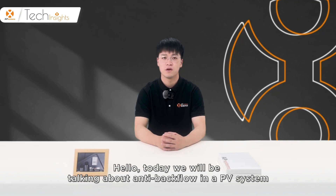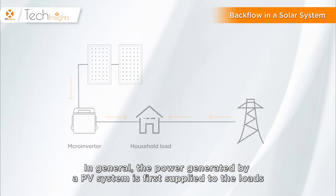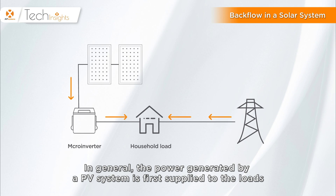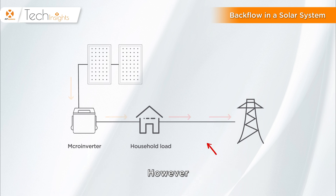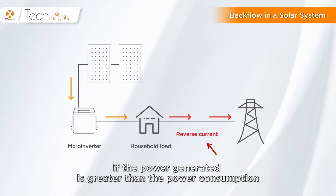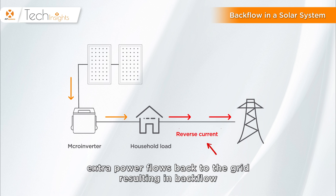Hello, today we will be talking about anti-backflow in a PV system. In general, the power generated by a PV system is first supplied to the loads. However, if the power generated is greater than the power consumption, extra power flows back to the grid, resulting in backflow.